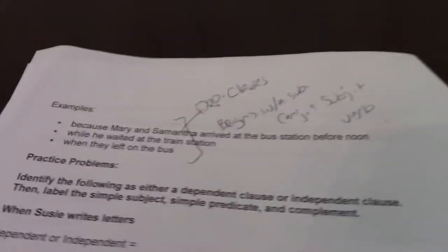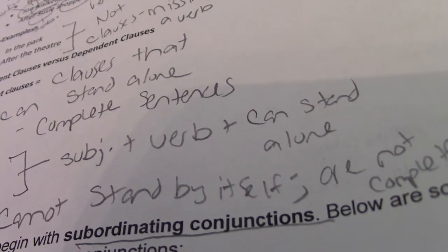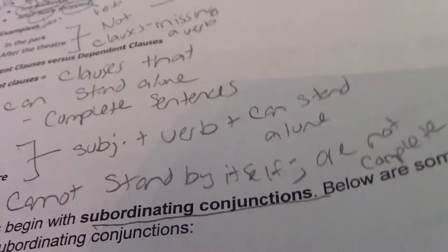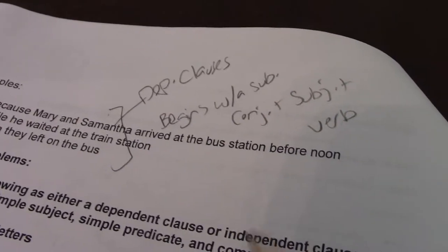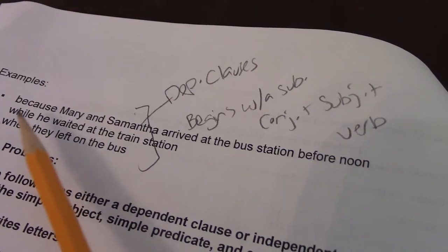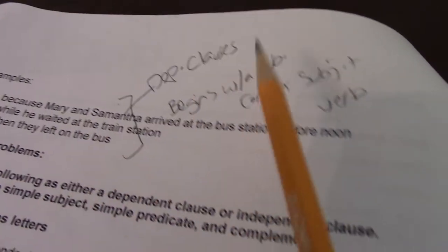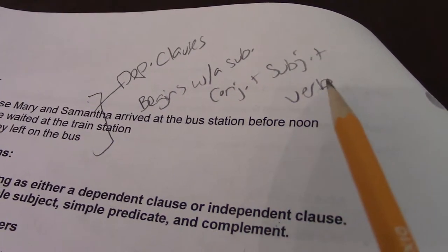So just to review: you have an independent clause if it has a subject and a verb and it can stand by itself, or if it's a complete thought. You have a dependent clause if it begins with a subordinating conjunction — like because, while, and when — and if it has a subject and a verb.